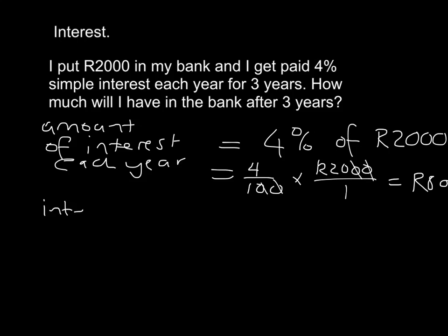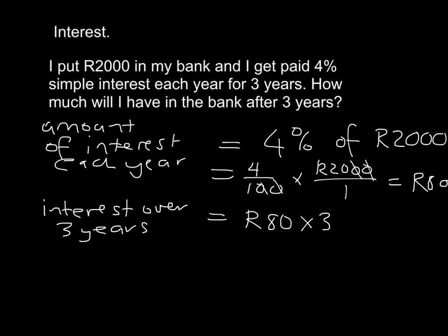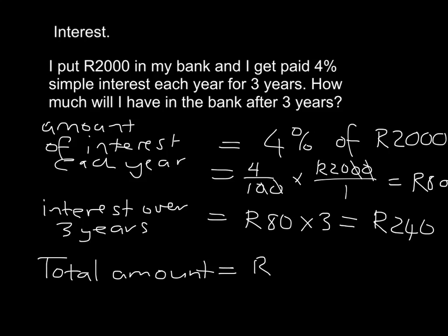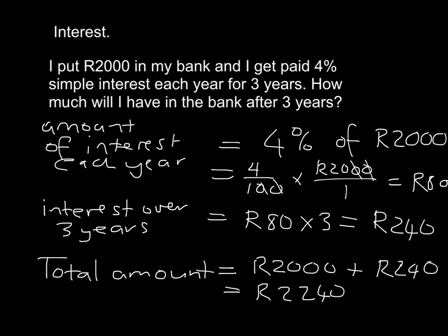The interest over three years - because you're going to leave it all there for three years - if you get 80 rand each year for three years, that's 80 times 3, which is 240 rand. Then we can work out your total amount in the bank: you've got the 2,000 rand that you put in, plus the 240 rand in interest that you earned. So in total you'll have 2,240 rand at the end of the three years.